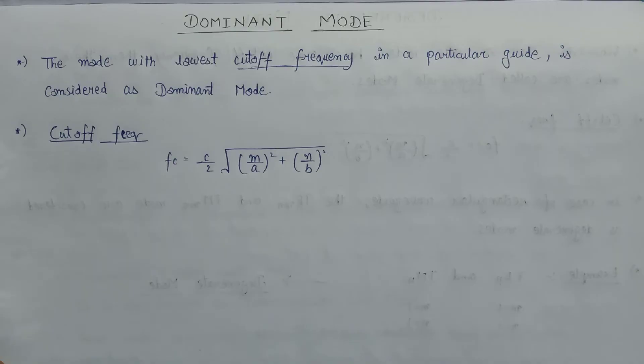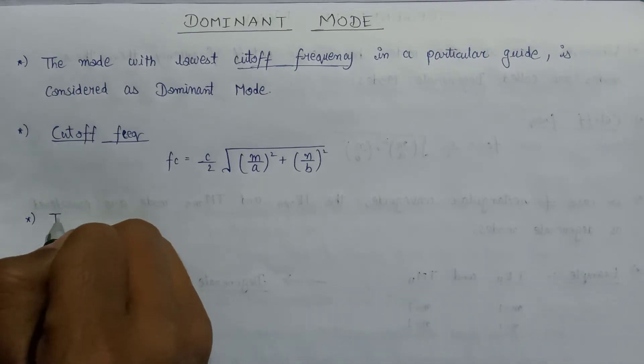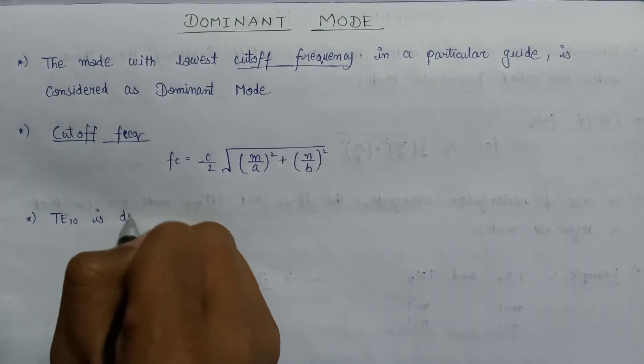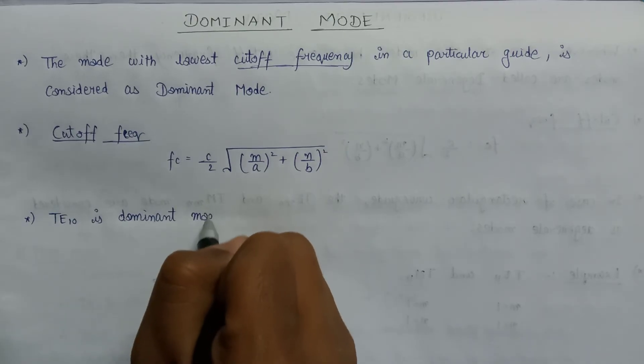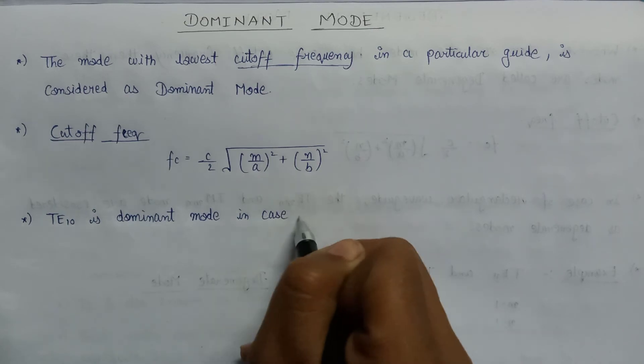Now the dominant mode in the rectangular waveguide is TE10 mode. So TE10 mode is dominant mode in case of rectangular waveguide.